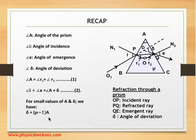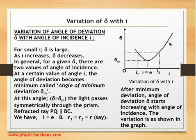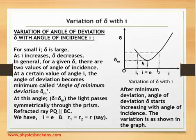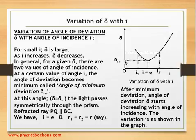This graph shows the variation of angle of deviation with angle of incidence. As you can see, for small values of angle i, δ is large. As you increase the angle of incidence, δ decreases and at a particular value of angle of incidence, it attains a minimum.